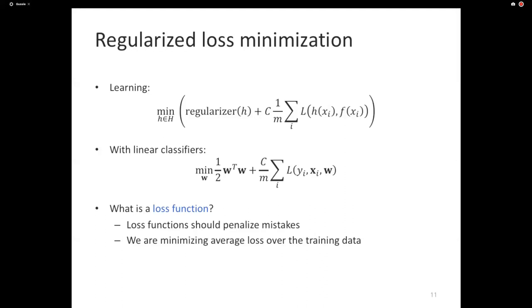That way we are trying to push the hypothesis to be as similar as possible to the true function. Say we are doing binary classification — what's the ideal loss function? How do we evaluate a classifier? You just compare the true value of the function F of X against the predicted value of the hypothesis H of X.